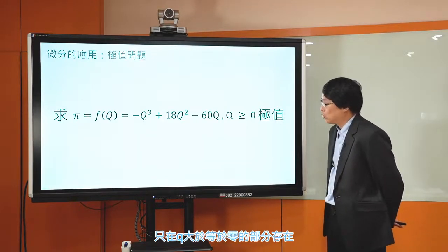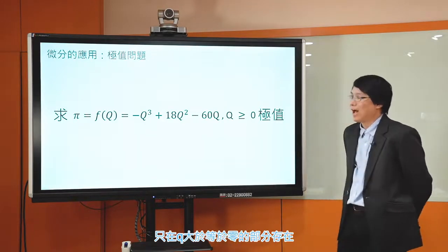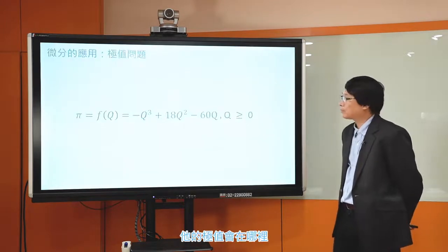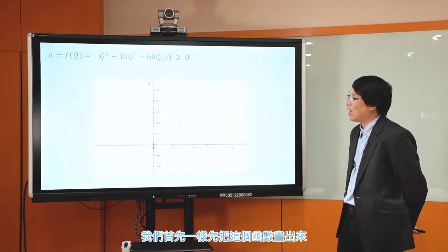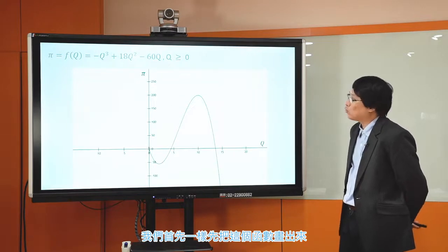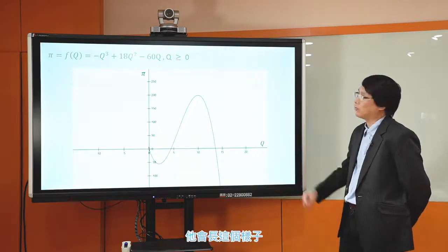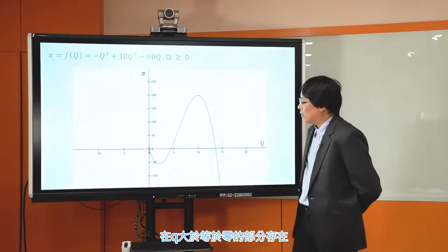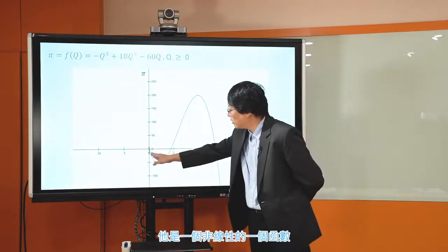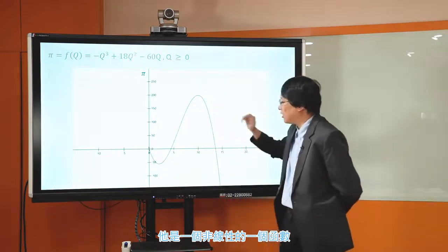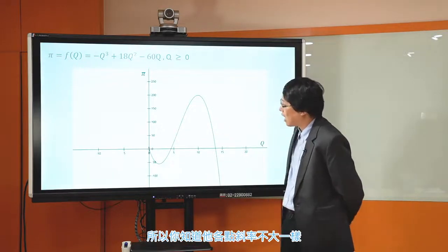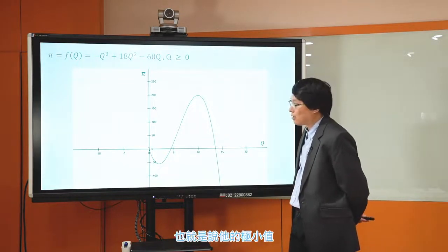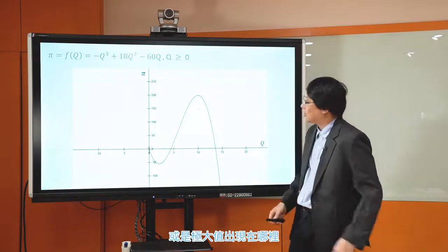我们先从这样一个函数开始：π等于f(q)等于 -q³ + 18q² - 60q，这个函数只在q大于等于0的部分存在。我们来讨论这个函数的极值会在哪里，首先一样先把函数画出来。这个函数如果画出来，在q大于等于0的部分，它是一个非线性函数，各点斜率不一样，它的极大值或极小值出现在哪里？